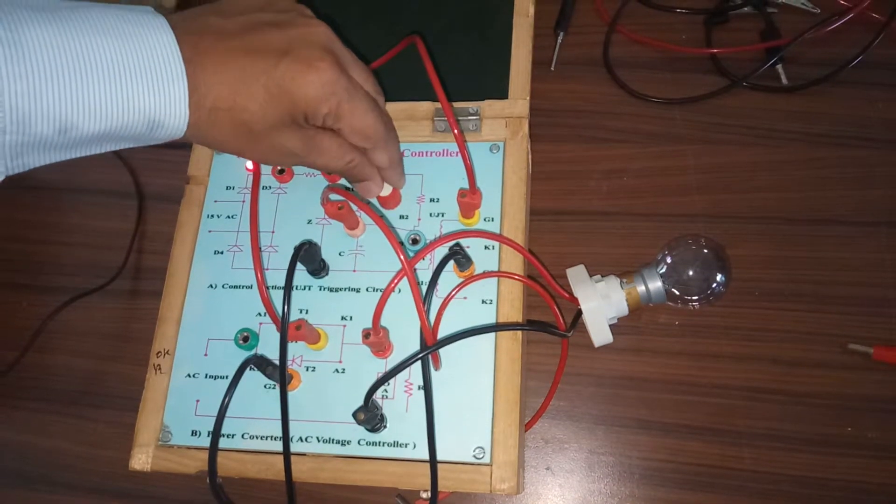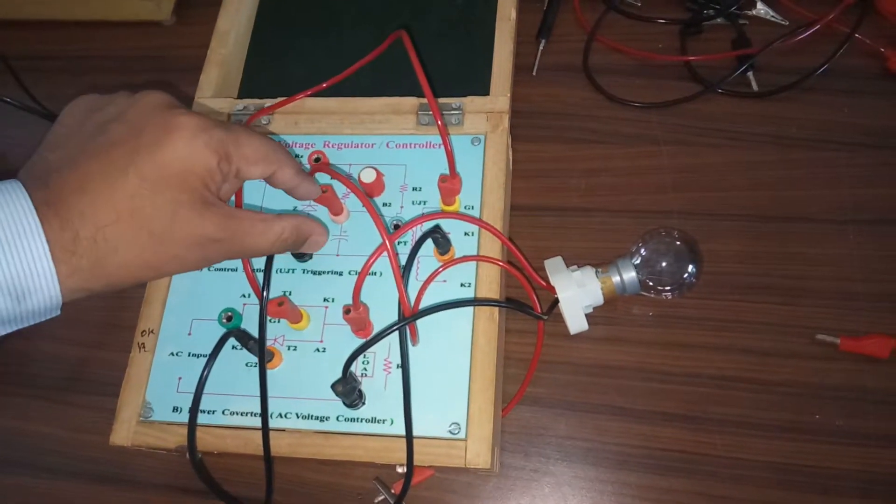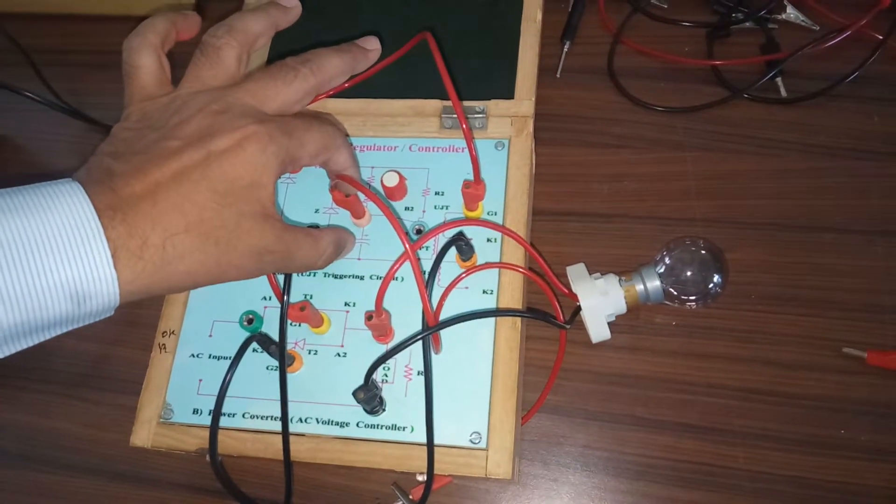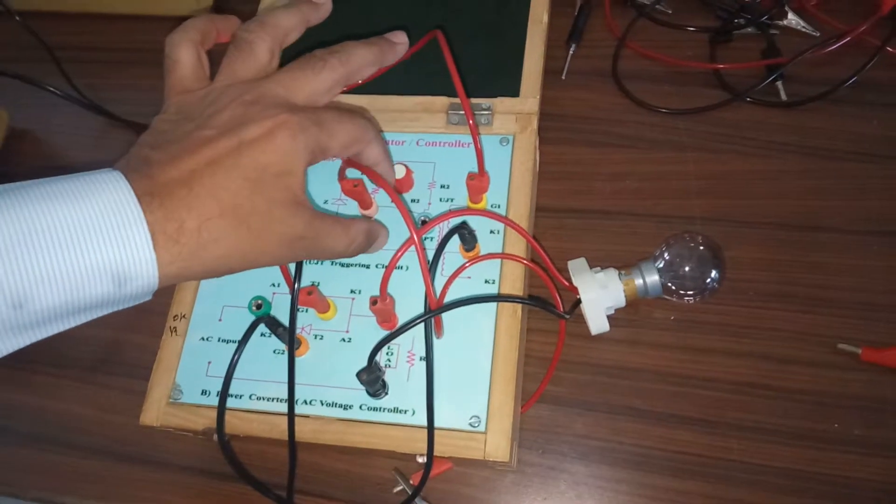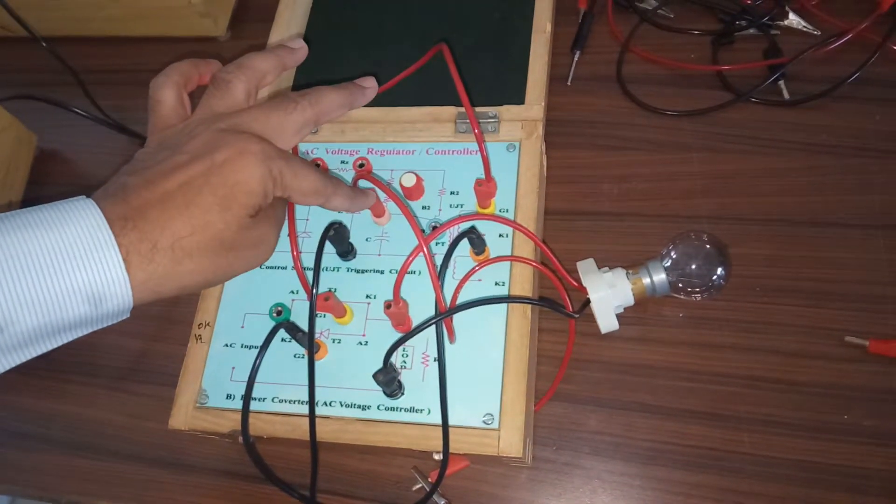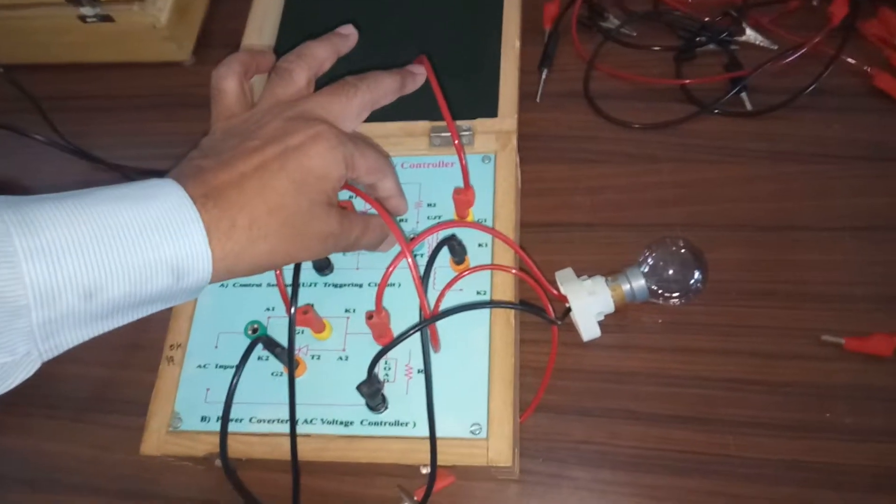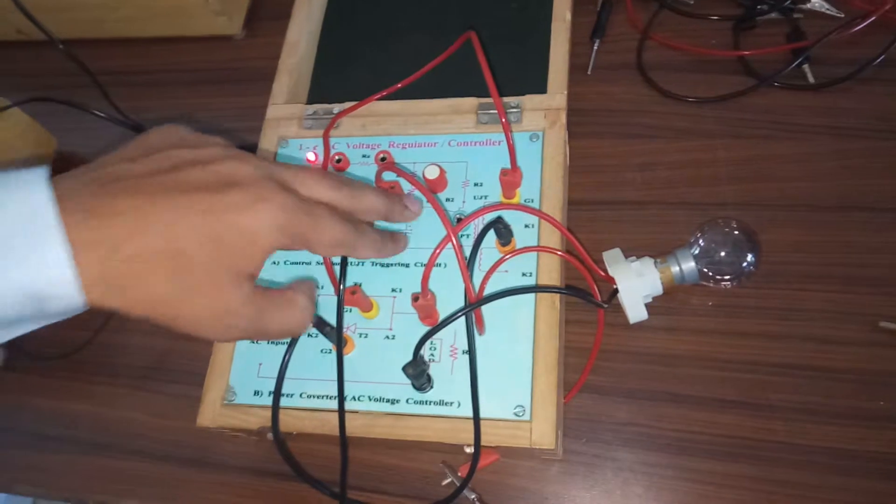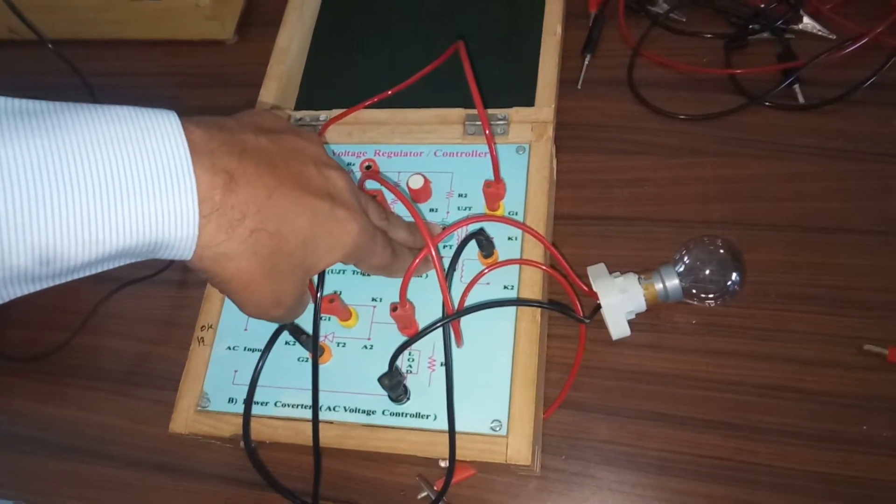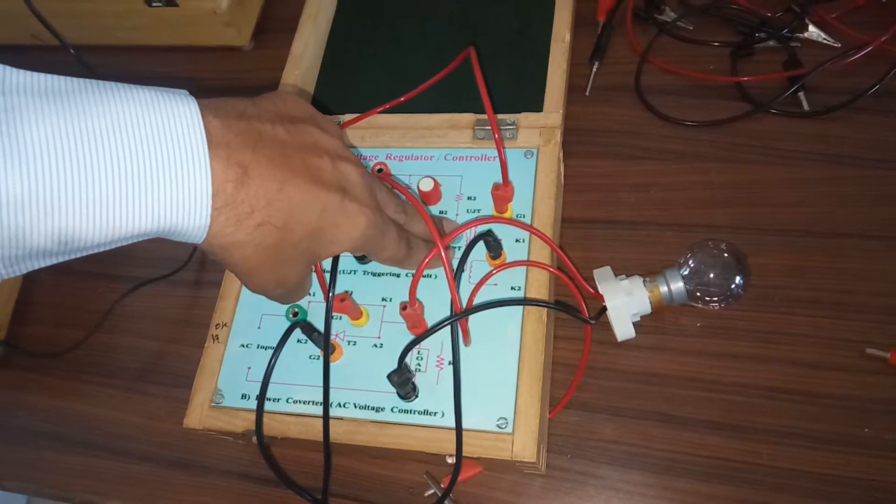By varying this potentiometer, you can change the voltage on this capacitor. Whenever the voltage on this capacitor will reach to ETA VBB plus VD, which is connected to emitter of this UJT, whenever it will reach to its value ETA VBB plus VD, this UJT will turn on and here you will get, here we have connected a pulse transformer. Across this pulse transformer, you will find a trigger pulse.